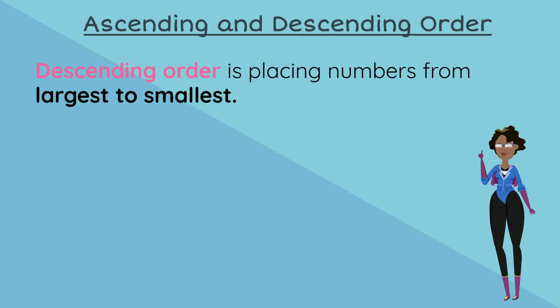Let's move on to descending order. Descending order is placing numbers from largest to smallest. So it's the opposite of ascending.